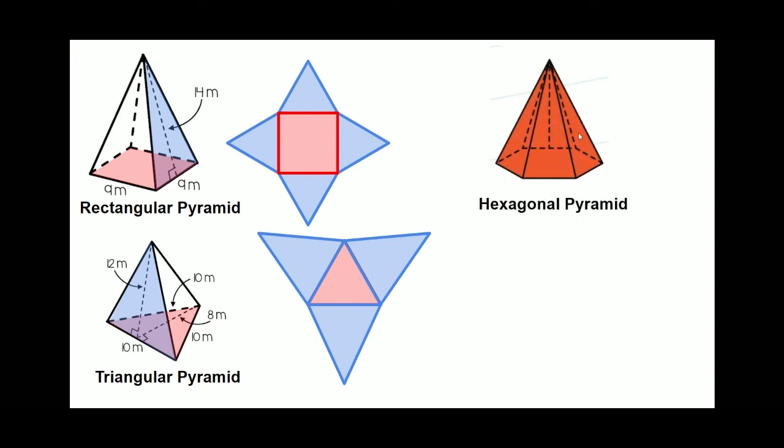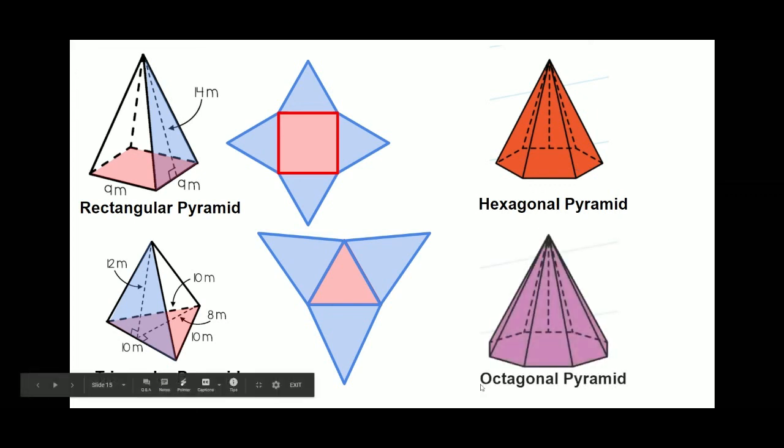As you can see, six sides means you've got six triangles on the sides forming to a point at the top. And this octagonal pyramid has eight sides which means you've got eight triangles forming a point at the top.